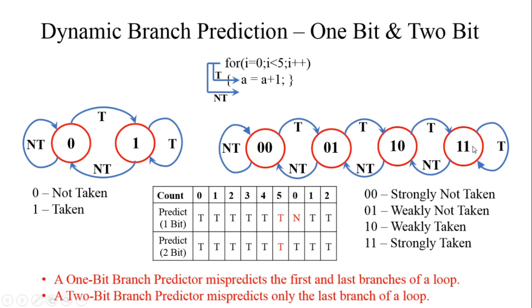To overcome this disadvantage, we use two-bit branch prediction. In the two-bit branch predictor, there are four states: 00 — strongly not taken; 01 — weakly not taken; 10 — weakly taken; 11 — strongly taken. We use the same for loop example, and initially consider the for loop to be in the strongly taken state (11).